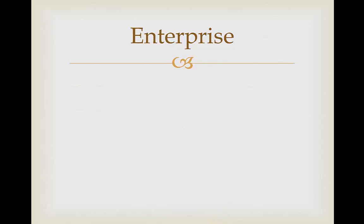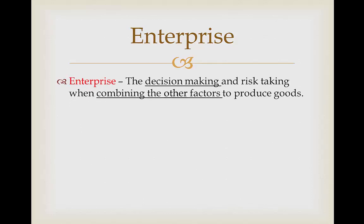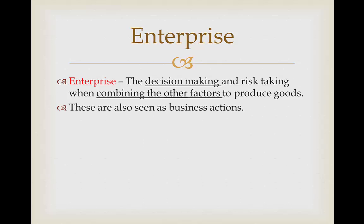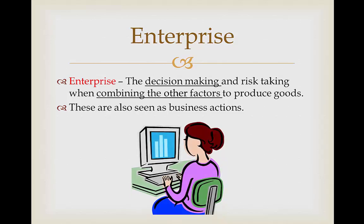The next factor of production is Enterprise. Enterprise is the decision making and risk taking when combining the other factors to produce certain goods. These are also seen as business actions. So when we're producing a good we're going to need to know how to actually combine all the other factors together and how to create the product — this is called the enterprise.